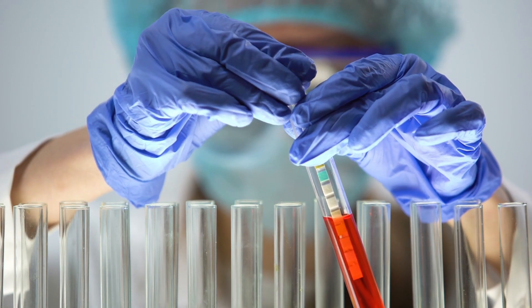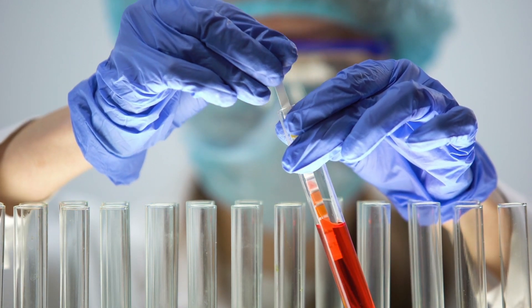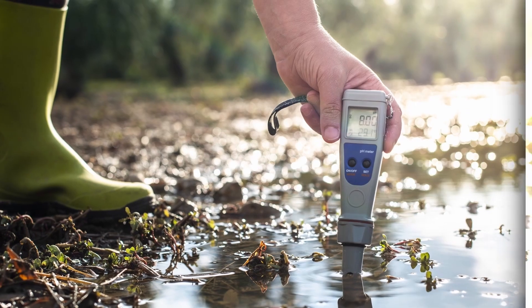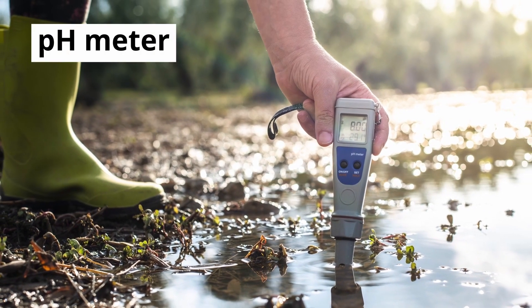Litmus paper only indicates whether the pH value is above or below 7. As such, pH meters are necessary to establish the actual value.